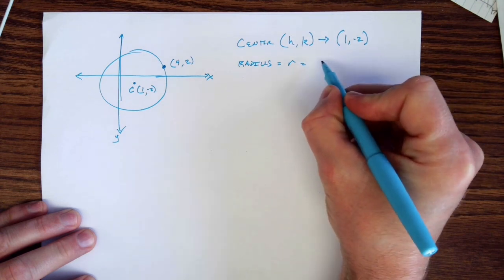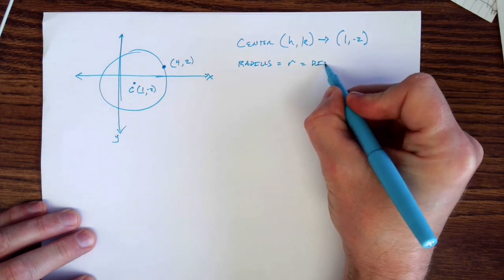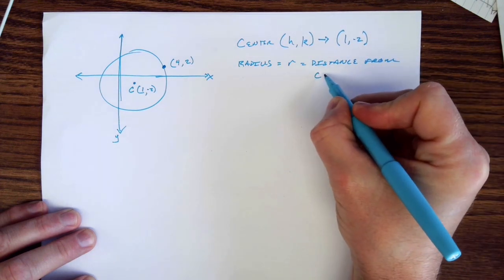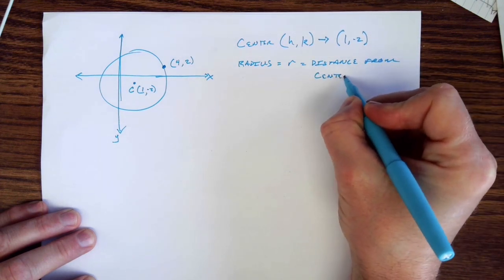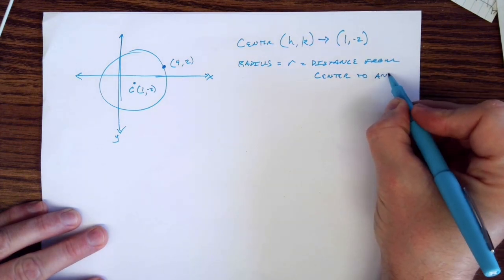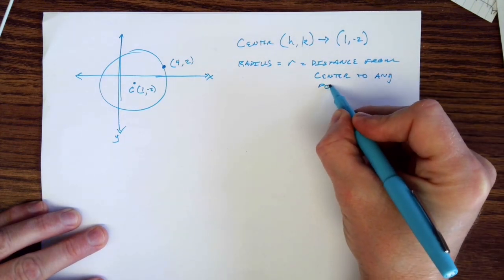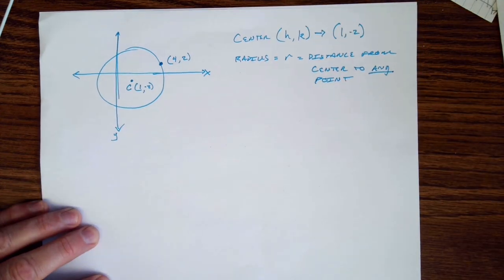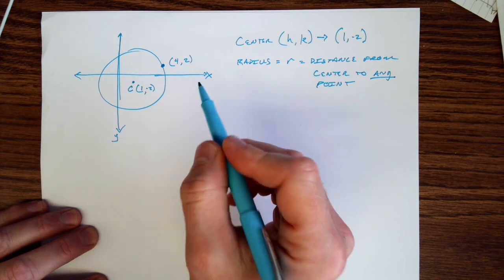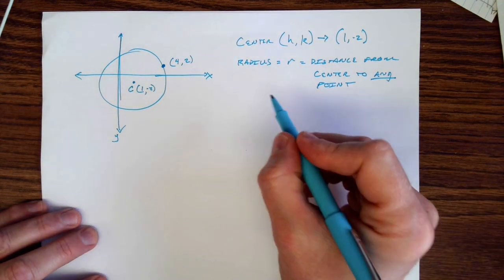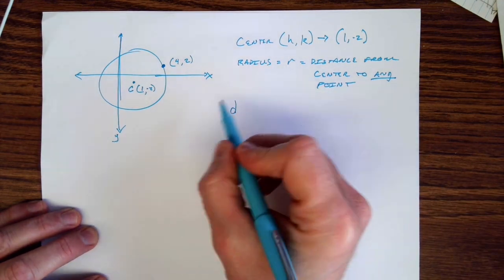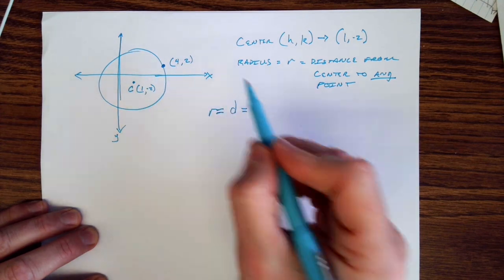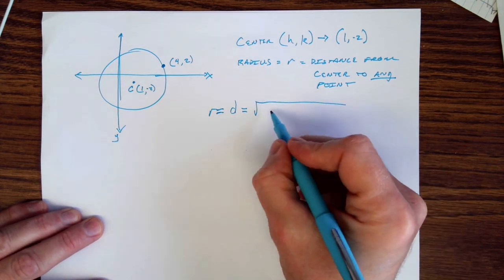The radius is the distance from the center to any point. And I do have to stress that word, any point. So I have one point, maybe a whole bunch of other points as well. To find the radius, I need to find the distance between these two points, which is I'm just simply going to use my distance formula.